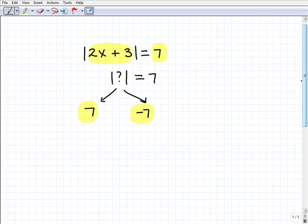So we're going to say all right 2x plus 3, we kind of figured out what you're equal to. You're either equal to a 7 or you're equal to a negative 7.